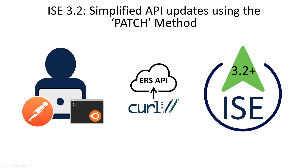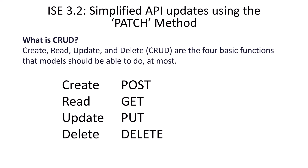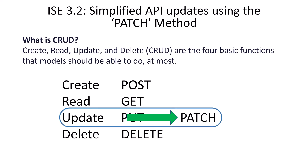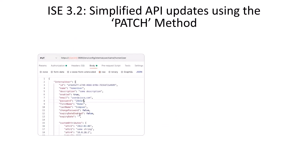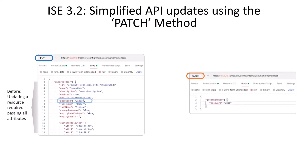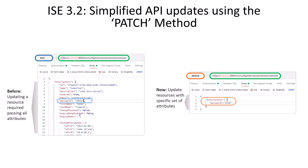Today we're going to talk about something exciting: an update to the ERS API. We're all familiar with CRUD — create, read, update, delete — the four operations we use with our API commands. In ICE 3.2, we've updated the update command. Instead of using a PUT, we're going to use a PATCH command. With PUT you have to send every attribute that exists for a user to update it, whereas with PATCH we only send the attributes specific to what we want to change, using the same URL but a different request type.